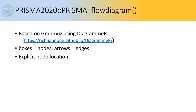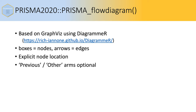For PRISMA 2020, I use explicit node location, so I explicitly say where the boxes should go. Another important factor is that the previous and other arms of the PRISMA 2020 flow diagram are optional. So if you haven't integrated studies from previous reviews, or if you haven't searched other sources of information, those arms can be dropped from the resultant flow diagram.